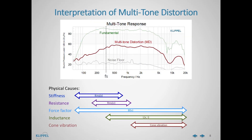Due to the nature of the multi-tone stimulus as a stationary broadband signal, the multi-tone distortion is caused by multiple non-linearities. For that reason, a correct interpretation of the multi-tone distortion curve will give us a lot of information about our DUT. For example, at the low frequencies, we can see the distortion caused by the stiffness KMS, and the distortion caused by the mechanical resistance RMS. The force factor BL will generate distortion in the whole frequency range, while the inductance from both displacement and current are present from the resonant frequency. Last, at the high frequency region, the comb vibration will introduce distortion.